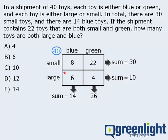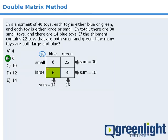So of the 40 toys in the shipment, 8 are blue and small, 22 are green and small, 6 are blue and large, and 4 are green and large. Now the question asks us to find the number of toys that are large and blue. So the answer here is B. Okay so that's the double matrix method. Be sure to learn this technique well before test day.